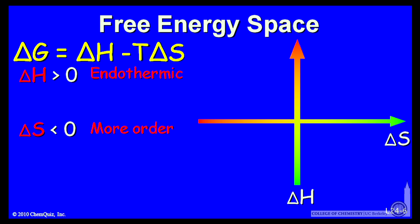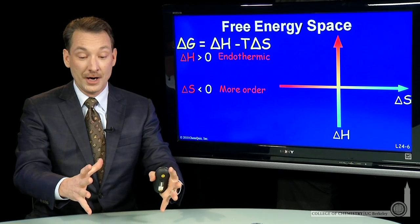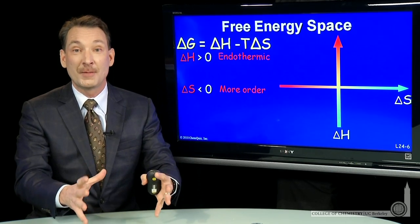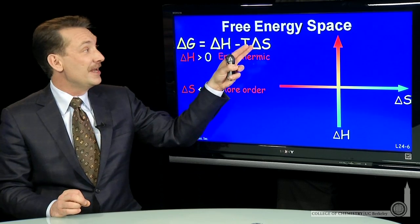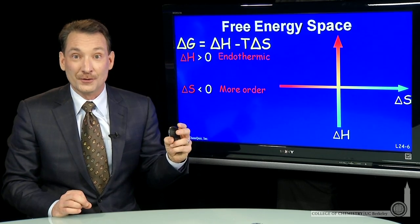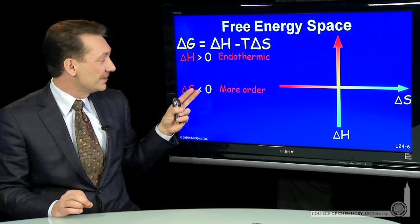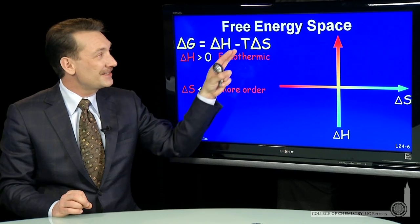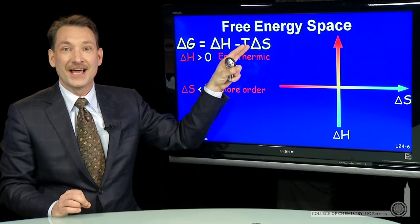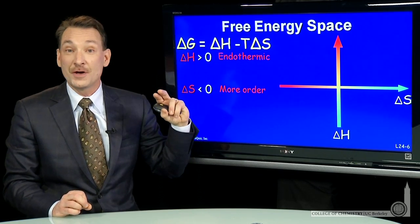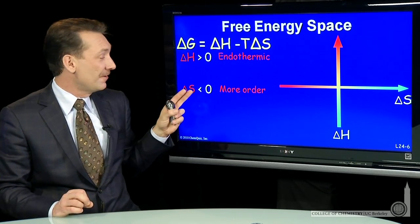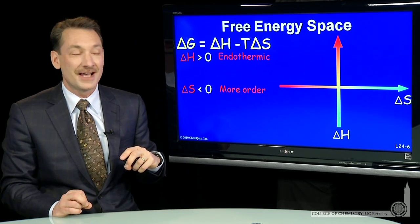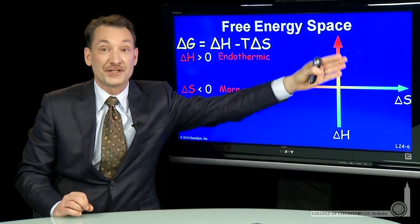If delta S is negative, that is, the system goes to a more constrained state where there are fewer microstates, a more orderly state, then delta S also is unfavorable, because a negative delta S makes the minus T delta S term positive. Remember, temperatures are always positive. So minus T delta S will be positive for negative delta S.